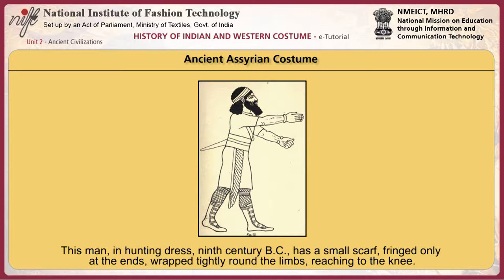This man, in hunting dress, 9th century BC, has a small scarf, fringed only at the ends, wrapped tightly around the limbs, reaching to the knee. The point to be noted in this figure is the arrangement of a fringe drapery which goes round the waist, is thrown over the shoulder and hangs down the back.